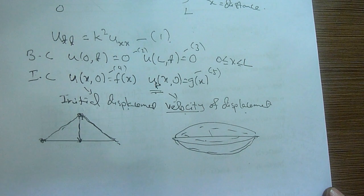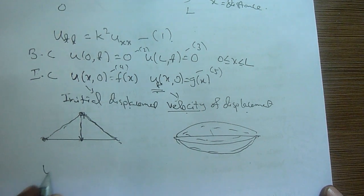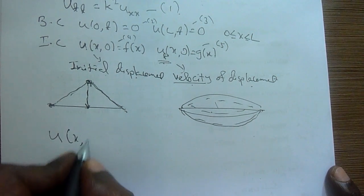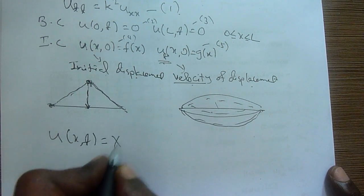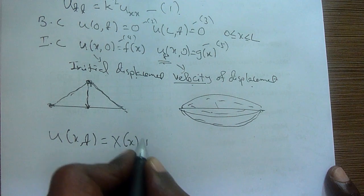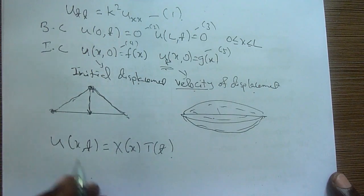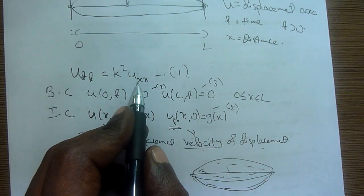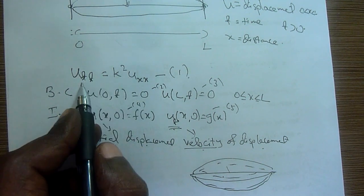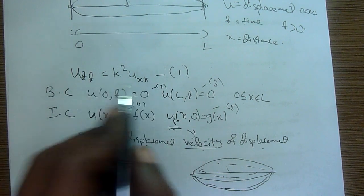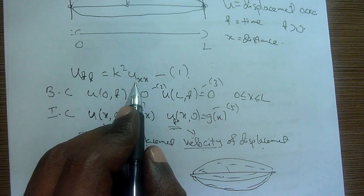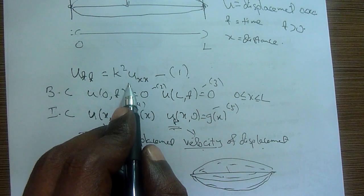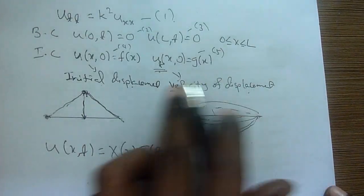Now let us proceed. U(x,t) — in order to solve it, we need to use the separation method. Can we use a separation method? Yes, because this is separable. Why? It is linear homogeneous, and boundary conditions have been given.